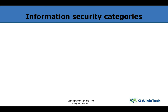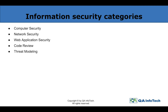There are different categories which deal with the different aspects of information security, starting with computer security, network security, web application security, code review, threat modeling, forensics and also security best practices. We will discuss each in detail in the upcoming videos. For now, we will just try to understand the security and penetration testing as a whole.